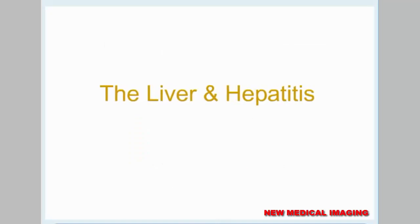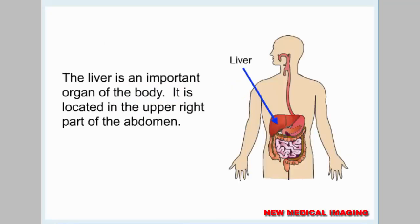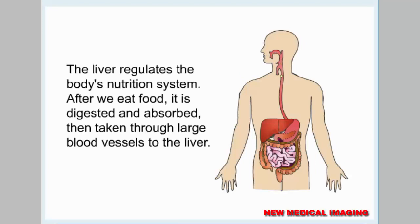The liver and hepatitis. The liver is an important organ of the body. It is located in the upper right part of the abdomen. The liver regulates the body's nutrition system. After we eat food, it is digested and absorbed, then taken through large blood vessels to the liver.